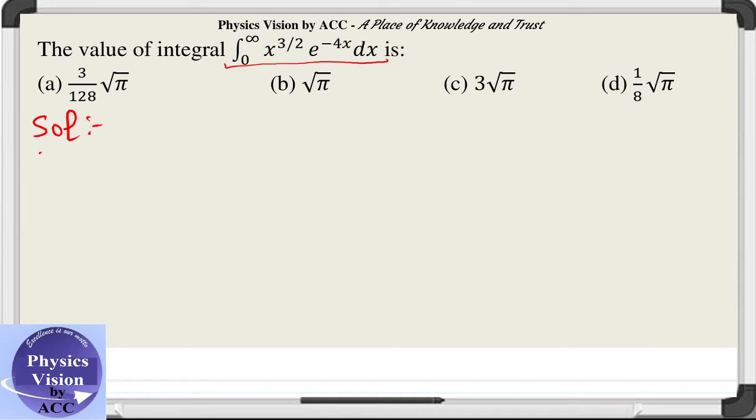Basically it is a simple question. The gamma function is defined in this way. Take care of your limits, the lower limit is zero in case of gamma function, it is not minus infinity. It is a very common mistake which many students do.